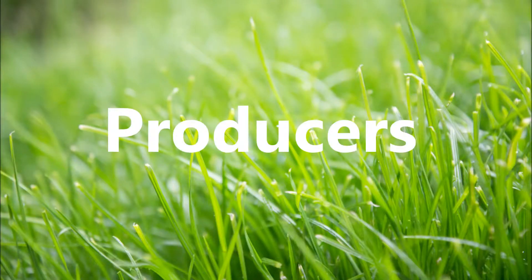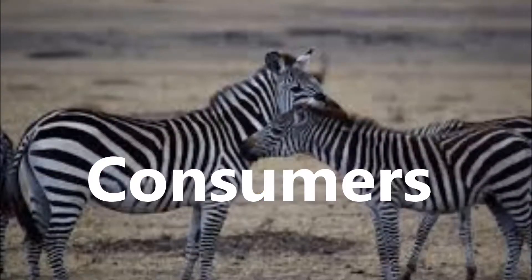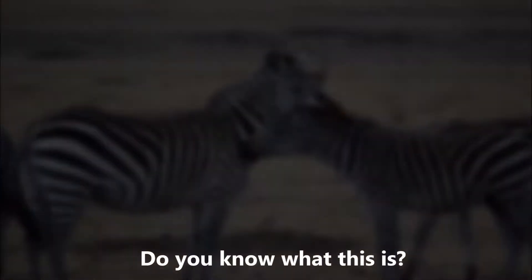We are going to talk about producers, which are organisms that produce their own nutrition and energy from the Sun — for example, grass. We will also talk about consumers, which are the lions that eat gazelles, or the gazelles themselves.